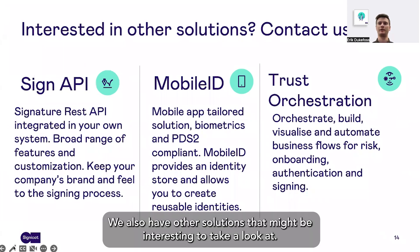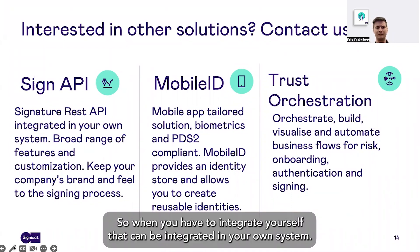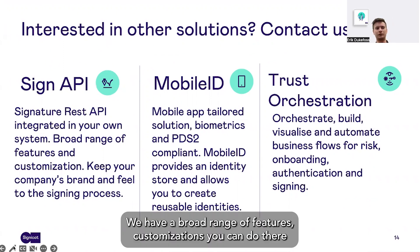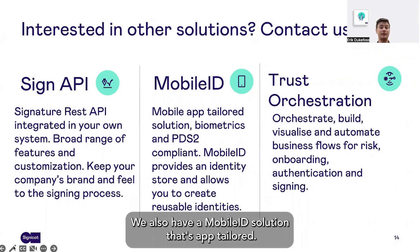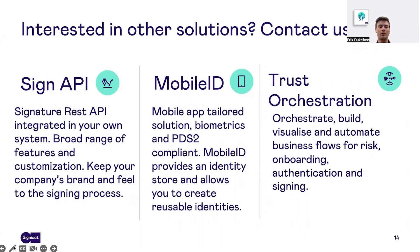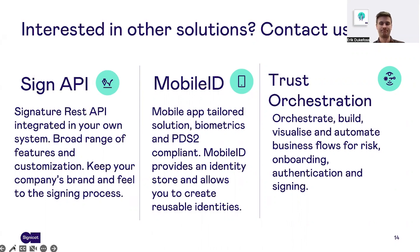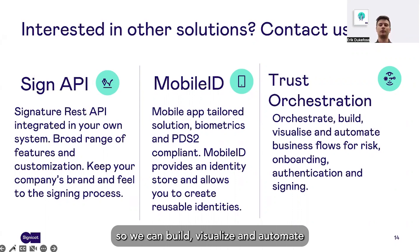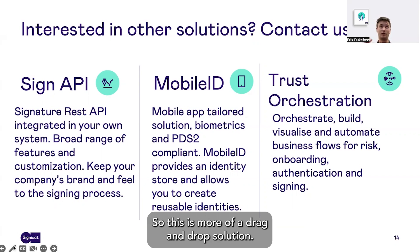We also have other solutions that might be interesting to take a look at. We have a signature REST API that you integrate yourself and can integrate into your own system. We have a broad range of features and customizations you can do there to make the signing process look and feel more like your own solution. We also have a mobile ID solution that's app-tailored, has biometrics, and is PSD2 compliant. It provides an identity store and allows you to create reusable identities. We can also do trust orchestration — you can build, visualize and automate business flows for risk, onboarding, authentication and signing. This is more of a drag and drop solution.